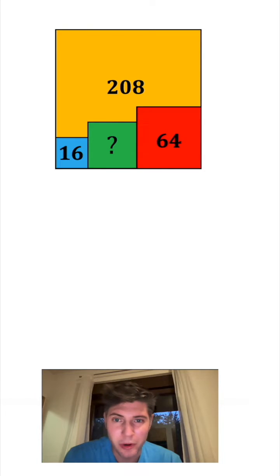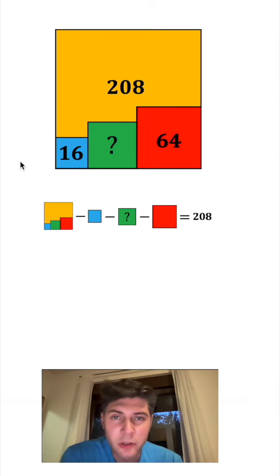Let's rewrite this as an equation. If we take the larger square minus the blue one, minus the green one, minus the red one, that should equal 208. Since I don't know the side lengths of the larger square, I'm gonna make them both x.